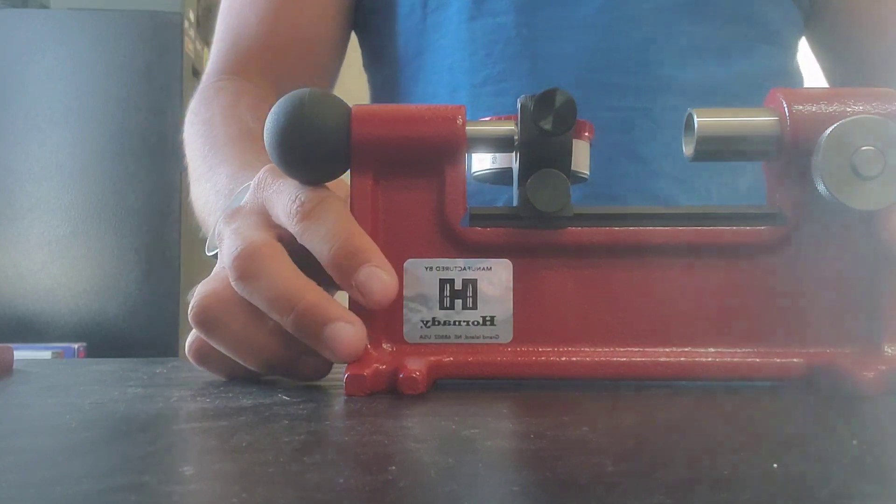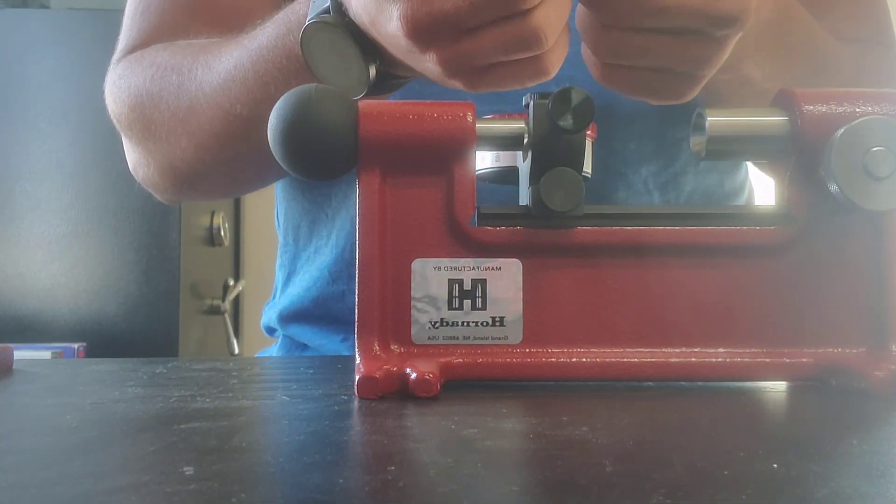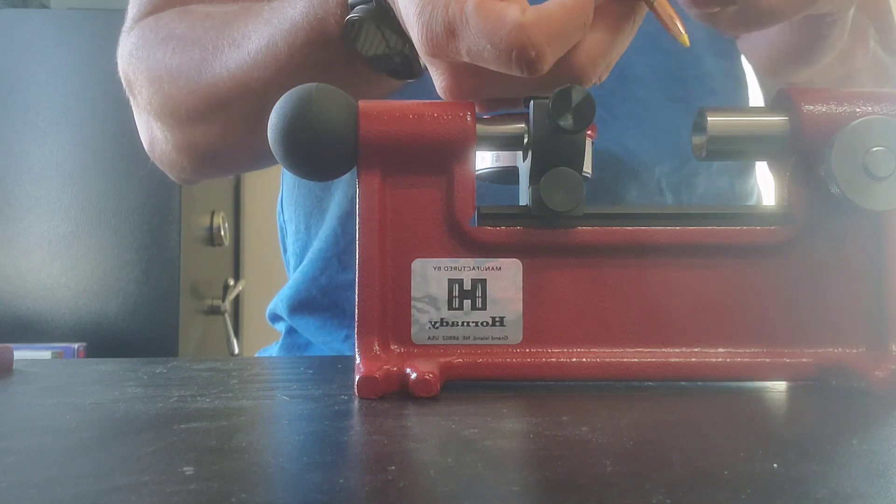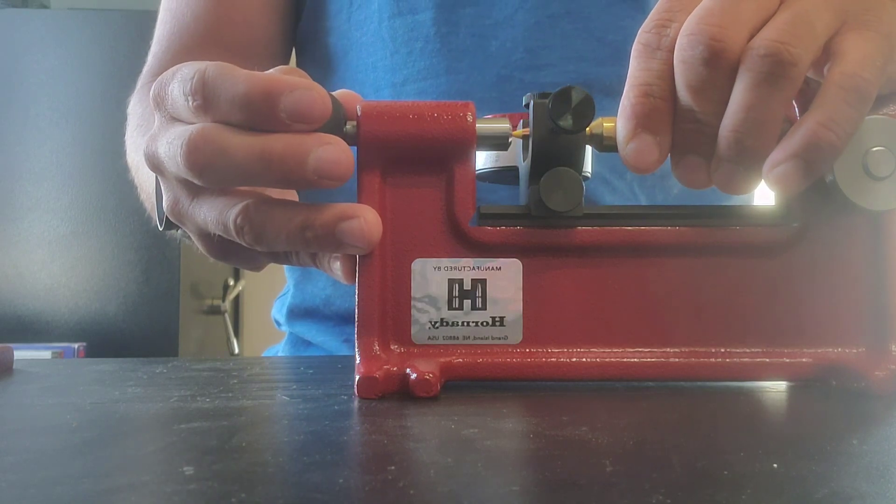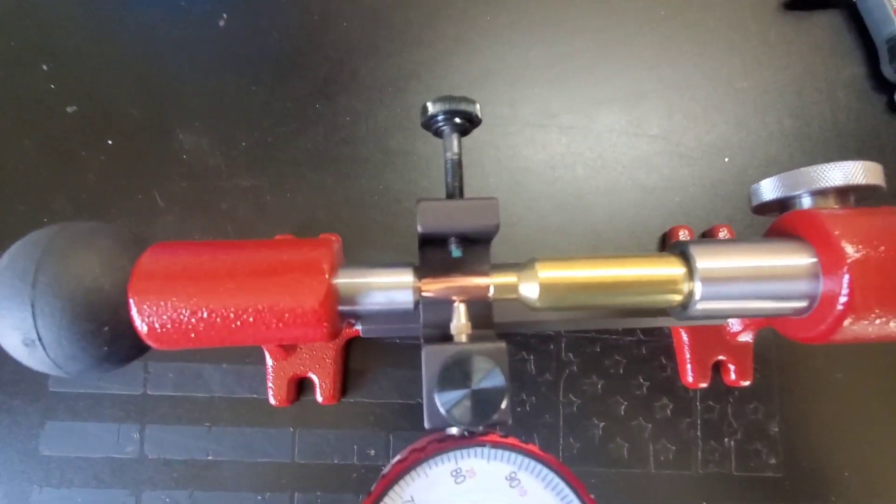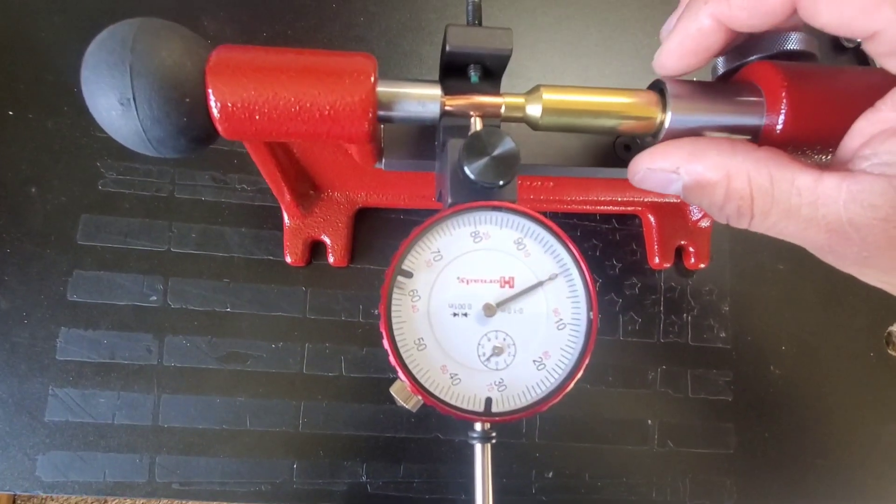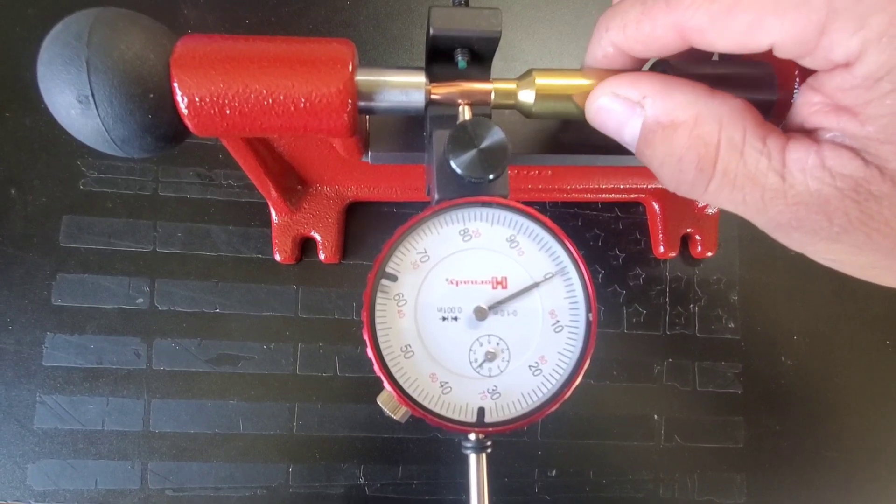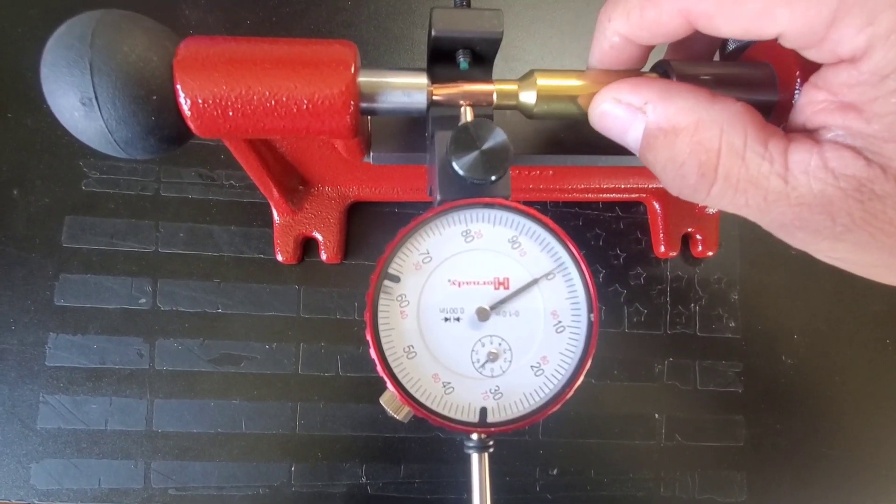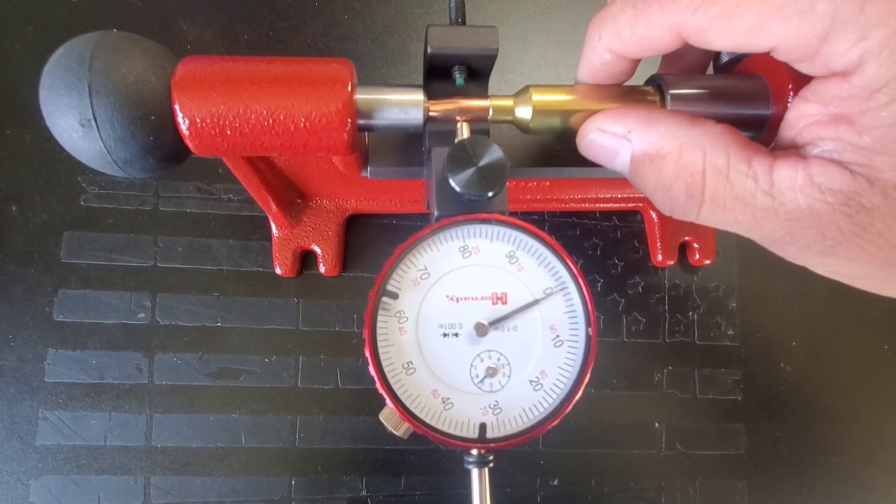We'll pull out the concentricity gauge and this measures the concentricity of the bullet in regards to how it's seated in the neck. This is seated in here, we're going to zero out our dial, and then we can spin our bullet here. That's one thousandth one way, one thousandth the other way, so we're plus or minus one thousandth.